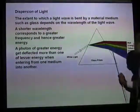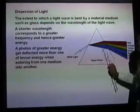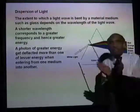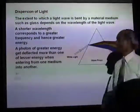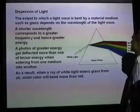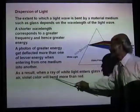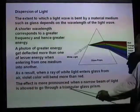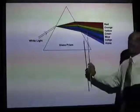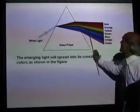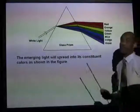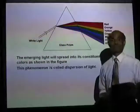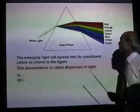A violet photon carries more energy than a red photon. So if you pass white light through a glass prism, what comes out is a dispersed form of all these wavelengths. When a ray of white light enters glass from air, violet color will bend more than red. The effect is more pronounced when a narrow beam of light passes through a triangular glass prism — the emerging light will spread into its constituent colors. This phenomenon is what we call dispersion of light.